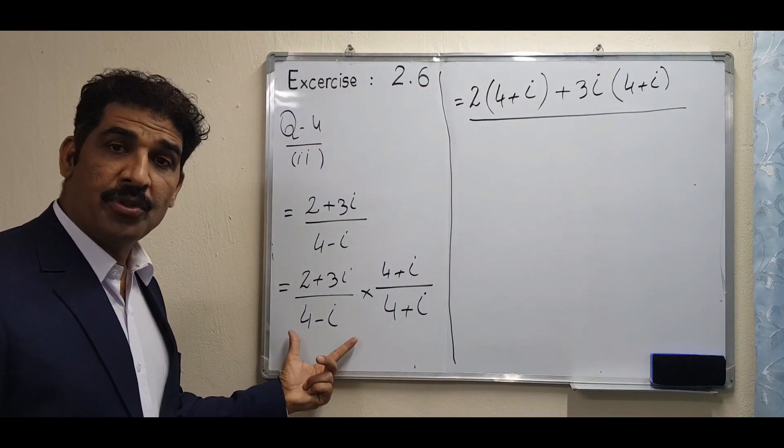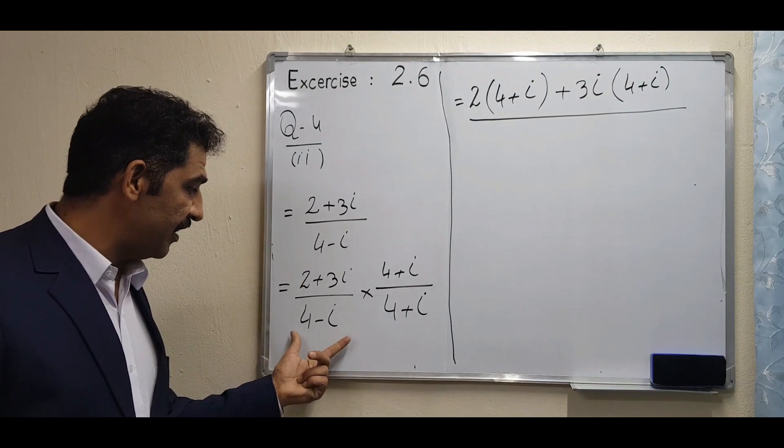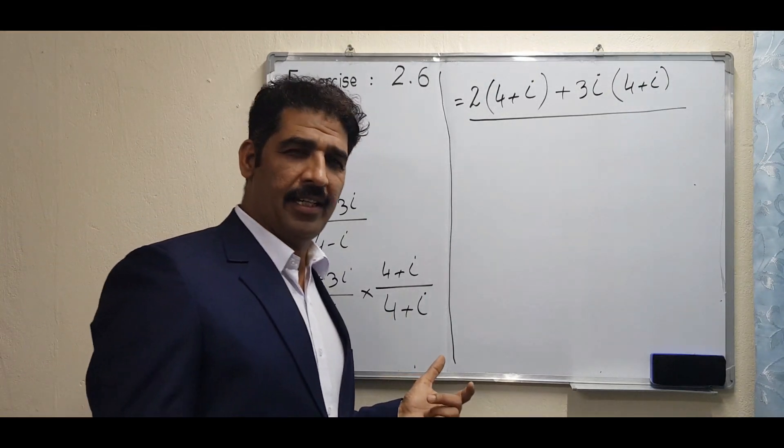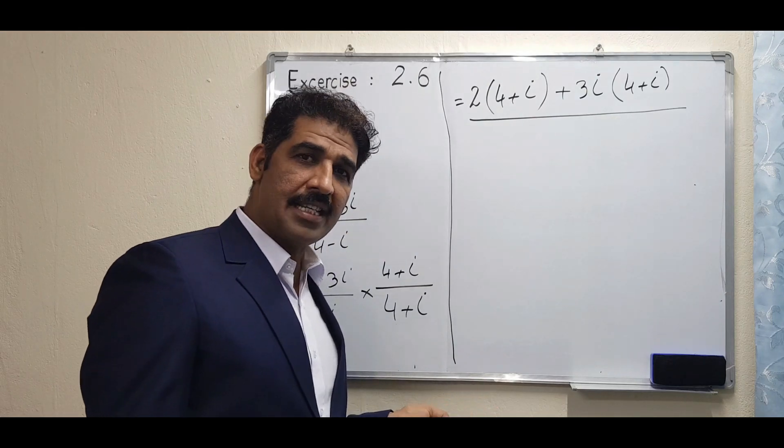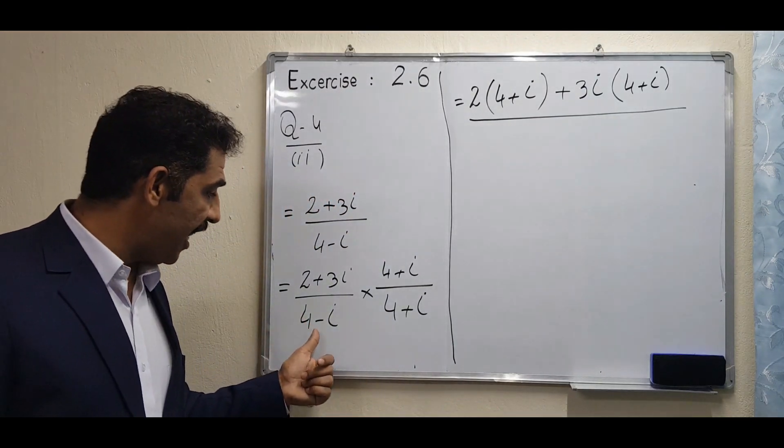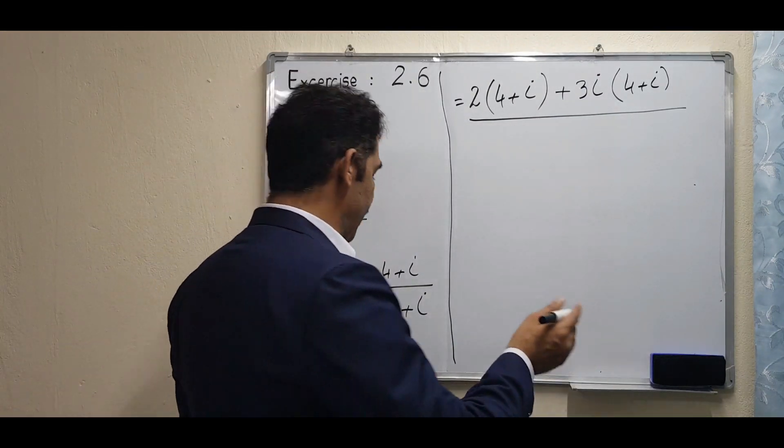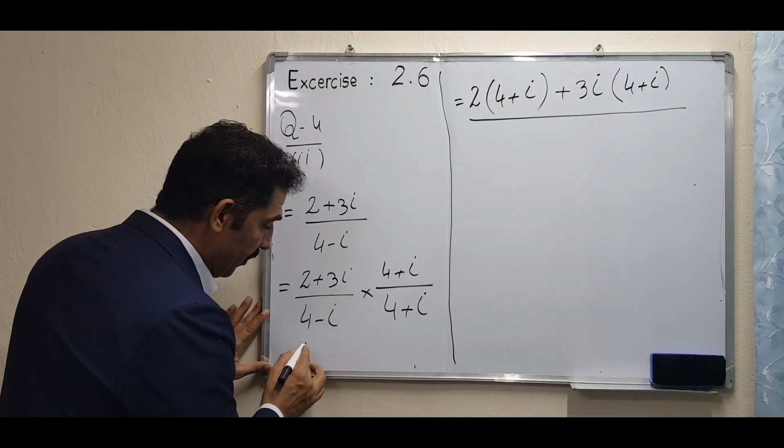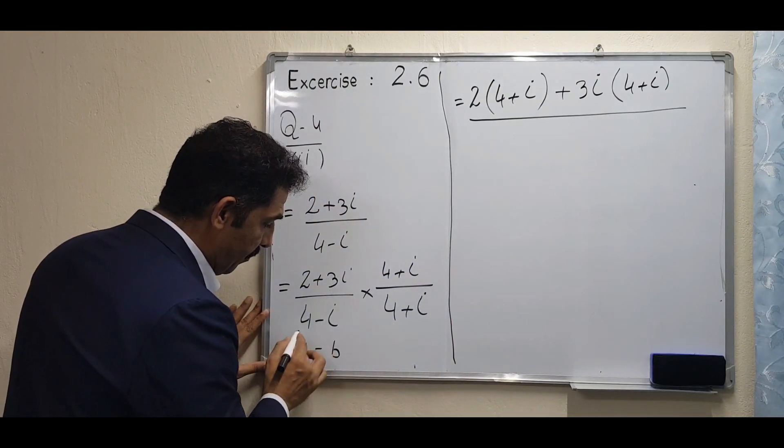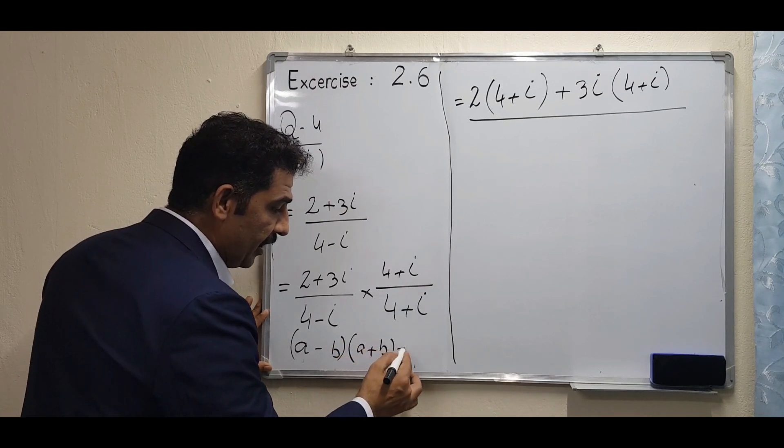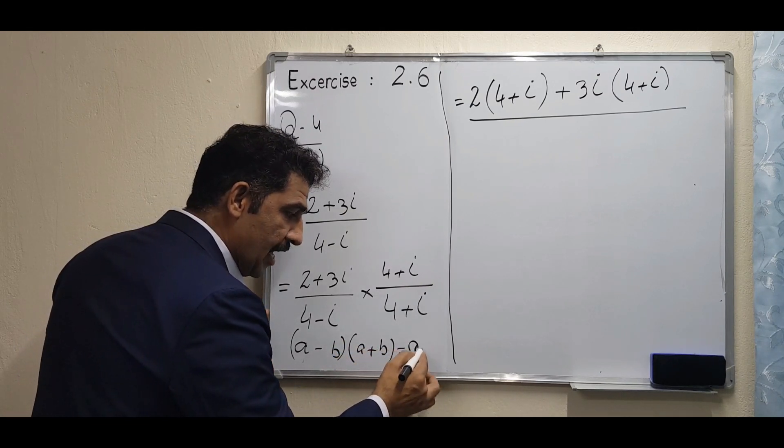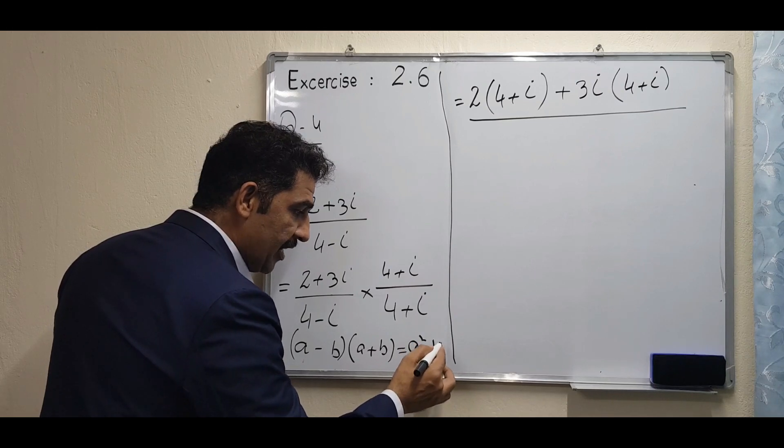Then the denominator, we have to use the formula. Which formula are we using here? Yes, good: (a - b)(a + b) formula. We can use here (a - b) into (a + b), which is equal to a² - b².